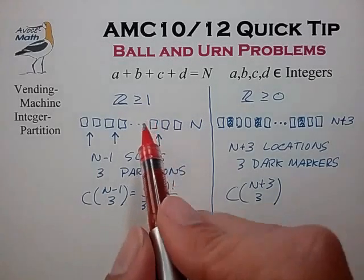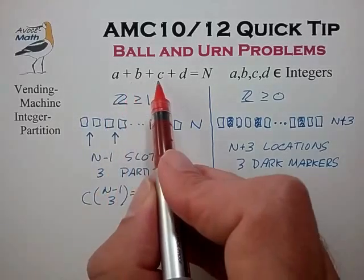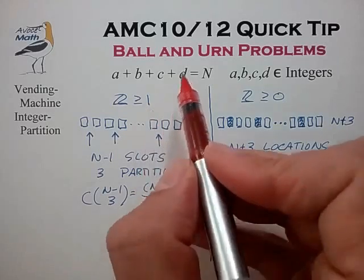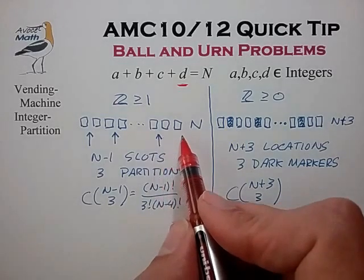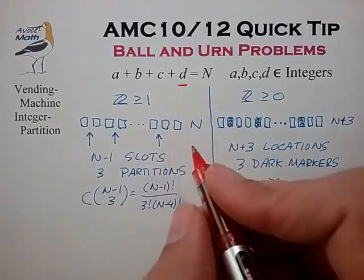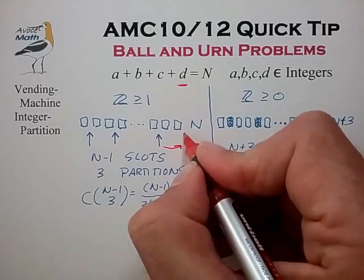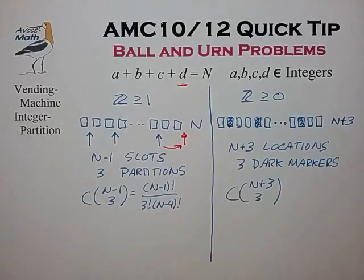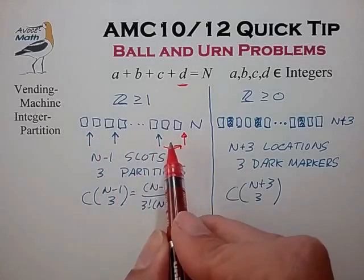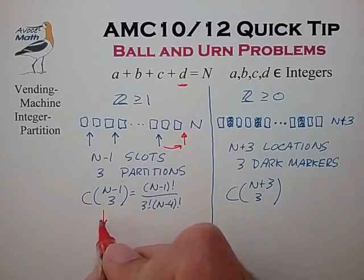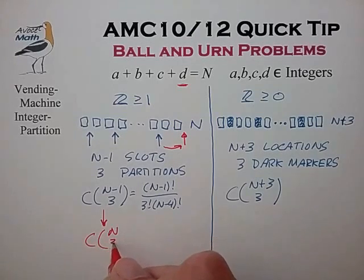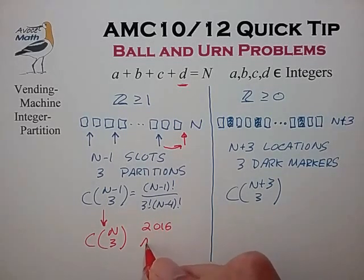In one variation, let's consider the first case where most of the variables — a, b, and c — are restricted to z greater than or equal to 1, but we allow variable d to take on the value of 0. This last pile can now take the value of 0, so the last partition can extend to an extra slot at the end. Instead of n minus 1 slots for three partitions, we now have n slots to choose the three partitions, giving the combination expression C(n, 3). This expression actually showed up in the 2016 AMC 10A — I'll give you a link in the description section.